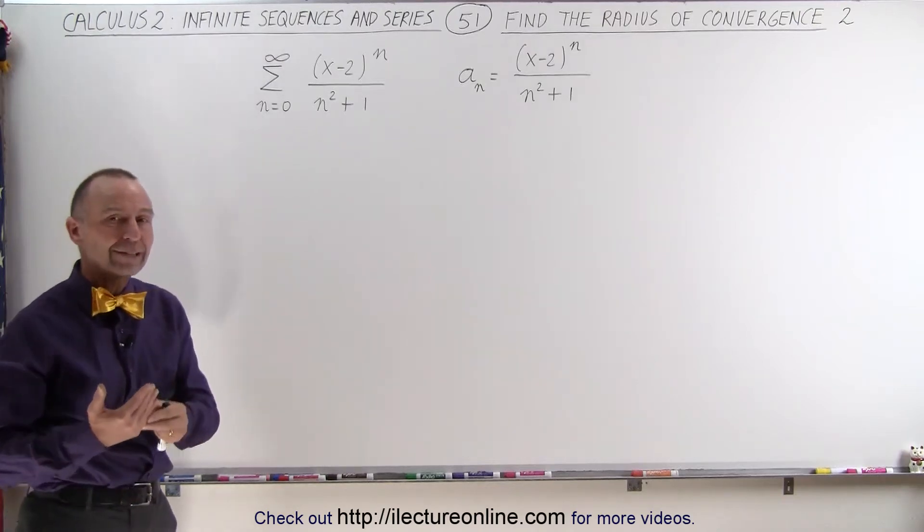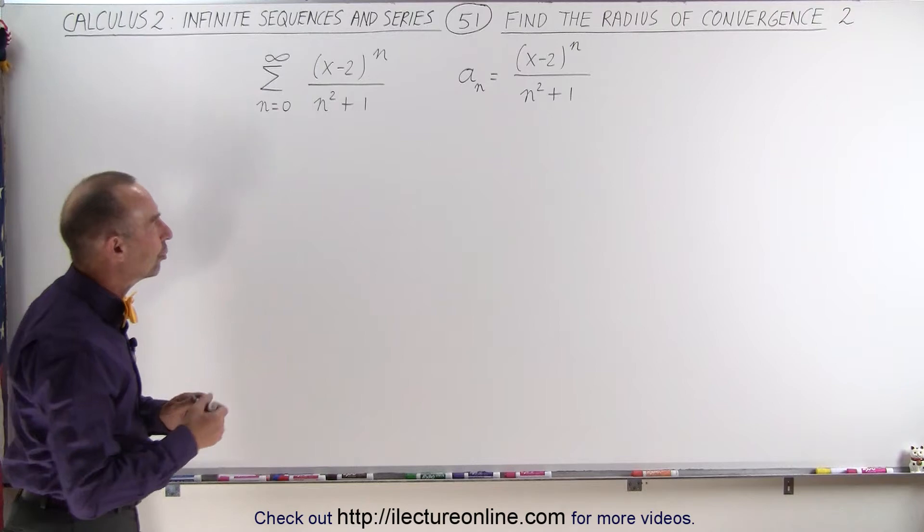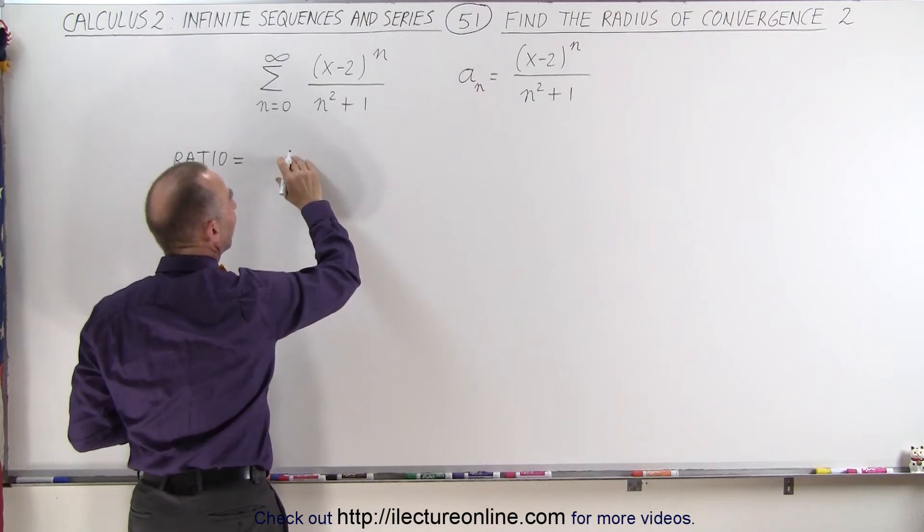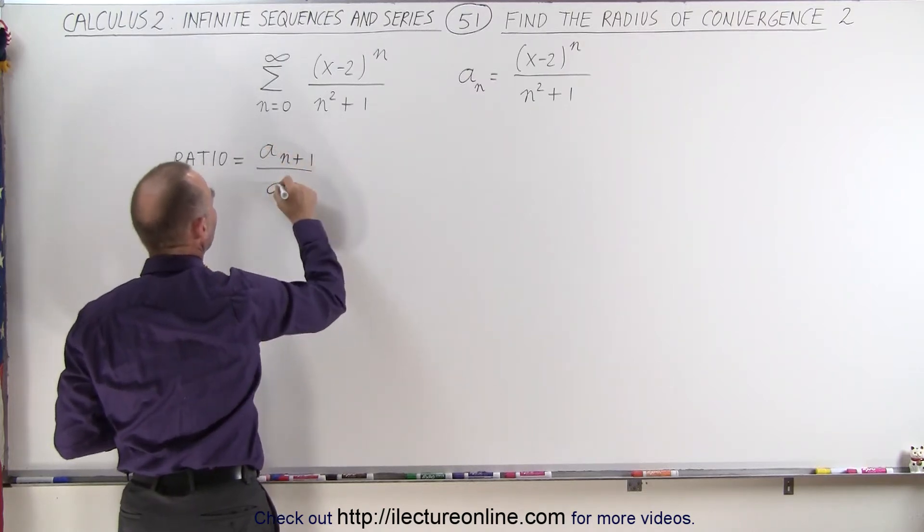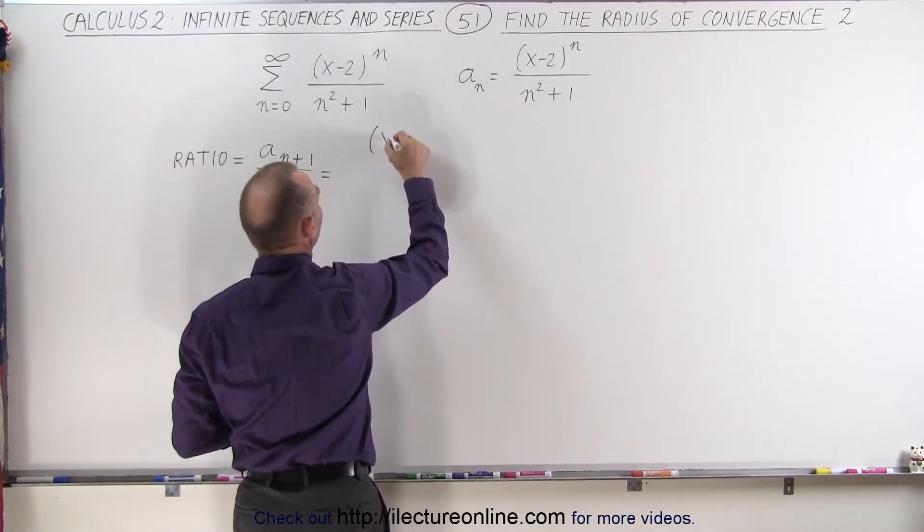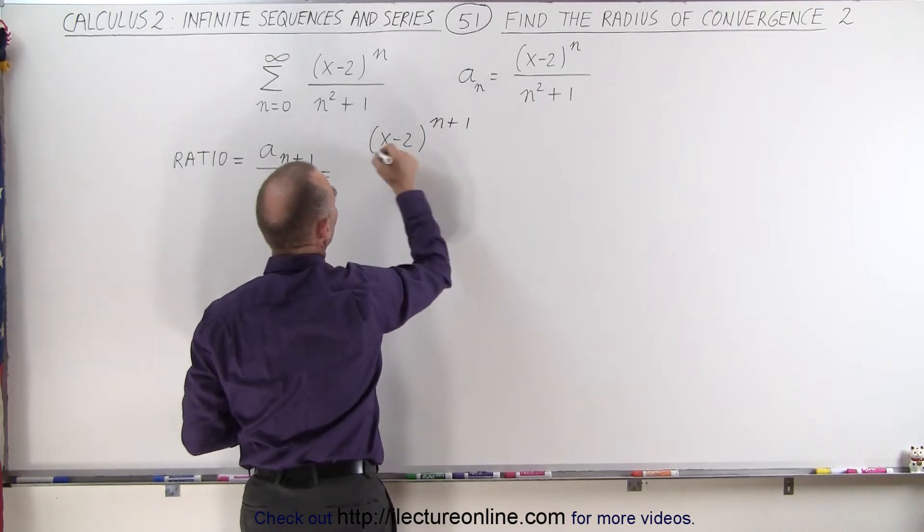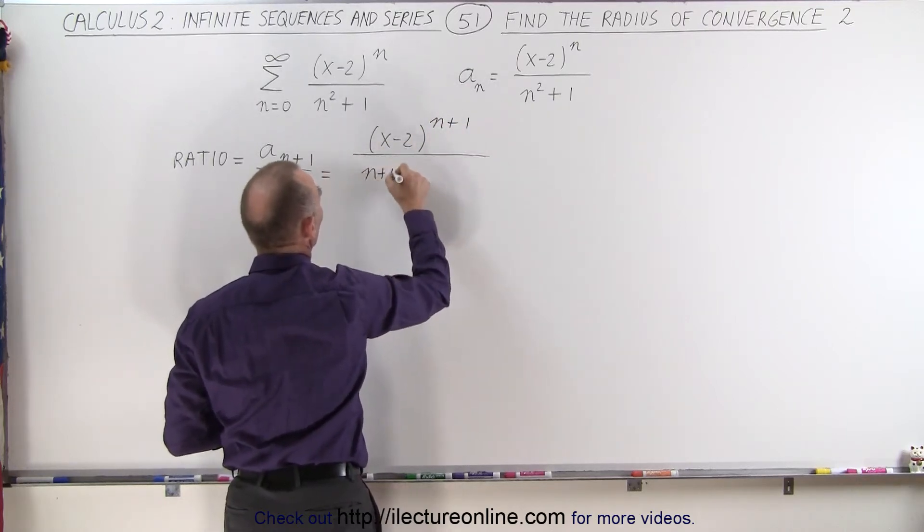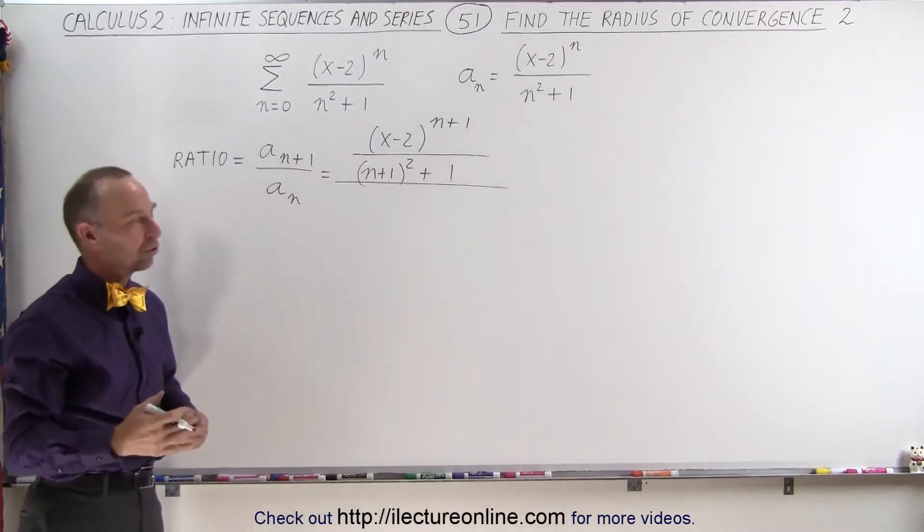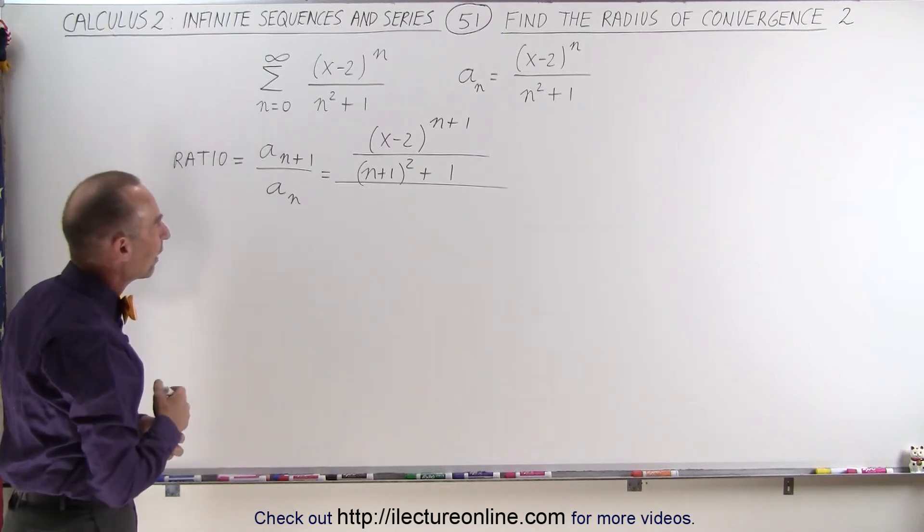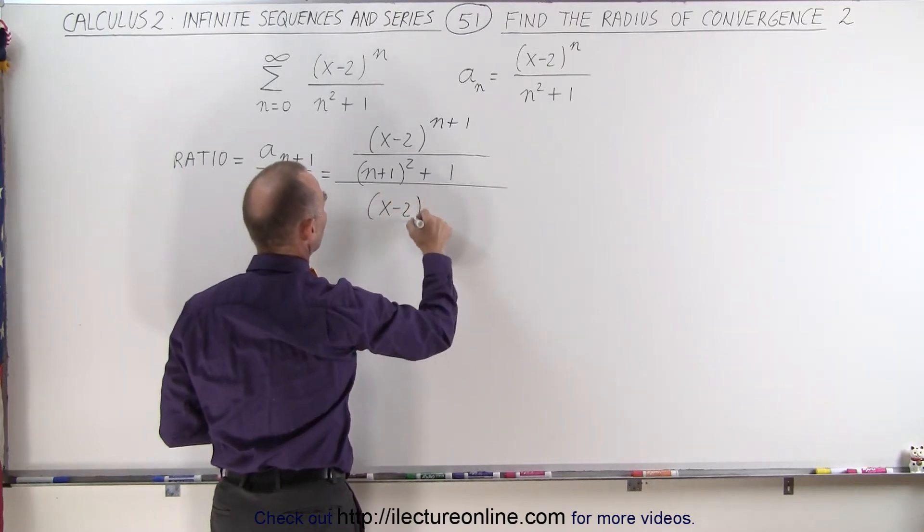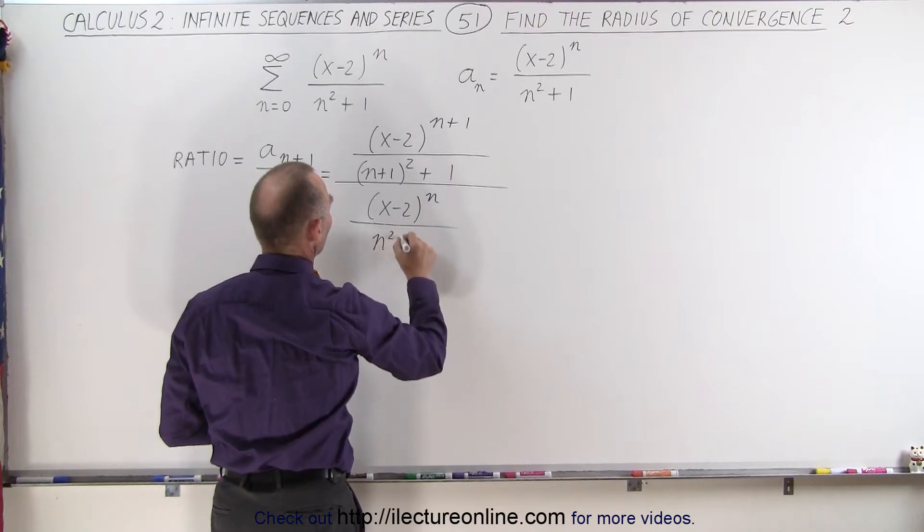Again, we're going to find the ratio of the n plus 1 divided by the n term. The ratio equals a sub n plus 1 divided by a sub n. Replace every n by n plus 1, we get x minus 2 to the n plus 1 term divided by n plus 1 squared plus 1. We find the next term in the series by adding 1 to every n, then divide that by the previous a sub n, which is x minus 2 to the n power divided by n squared plus 1.